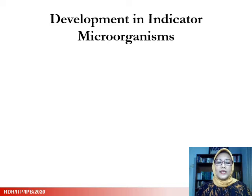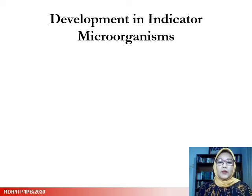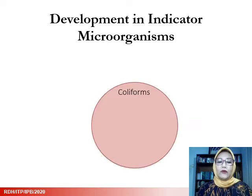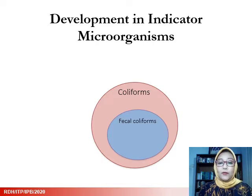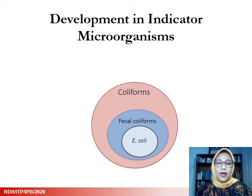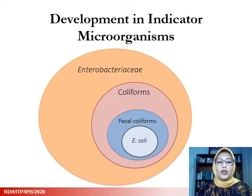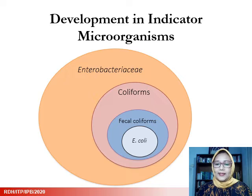As you can see, initially people used coliform, which was then refined into smaller groups such as fecal coliform and E. coli. But they also expanded to a larger group — Enterobacteriaceae — to provide a more comprehensive picture of contamination.